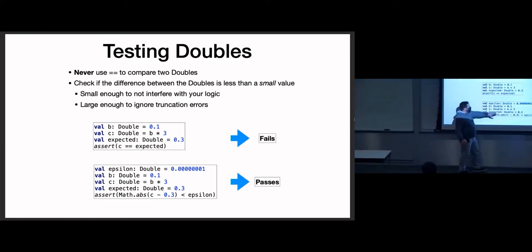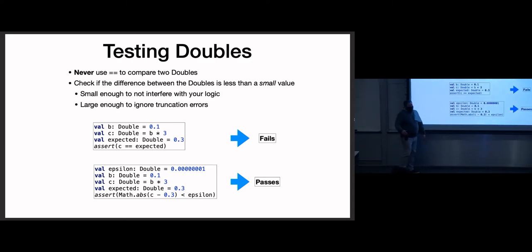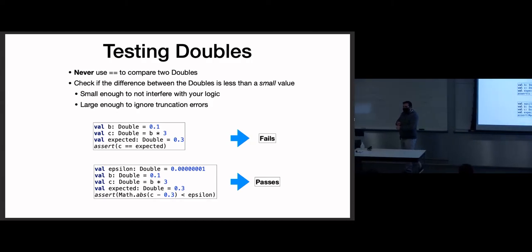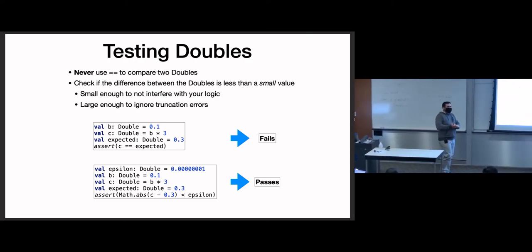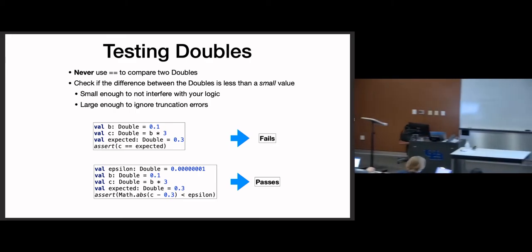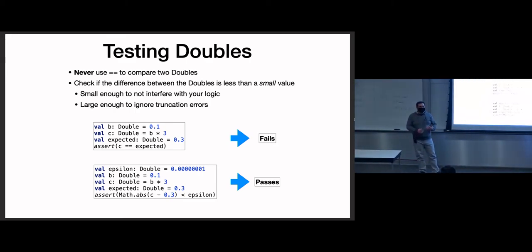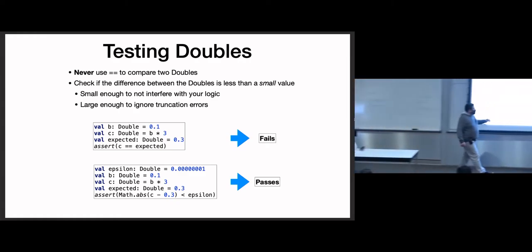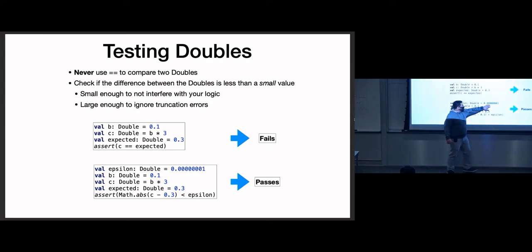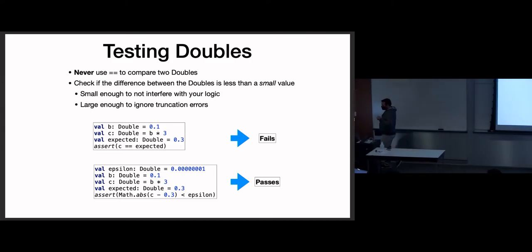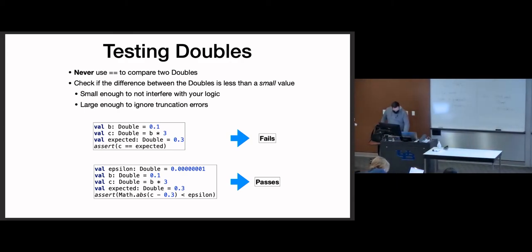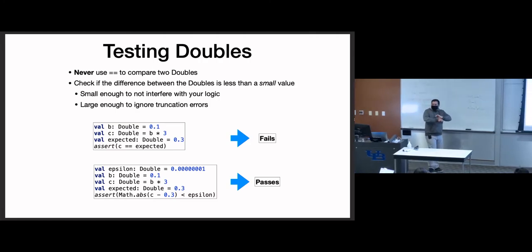If you're seeing 'failed a correct solution,' remember: never use == to compare doubles for equality. You have to allow some tolerance — an epsilon. It should be large enough to allow for truncation errors to still be accepted, but small enough not to interfere with the logic of your program. We don't want an epsilon of a hundred — we just want to eliminate those truncation errors.